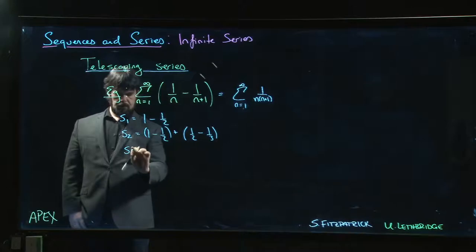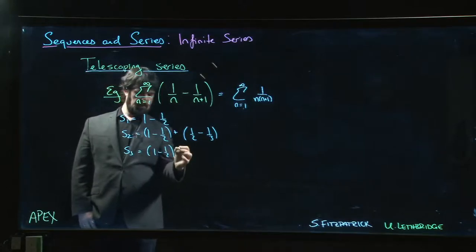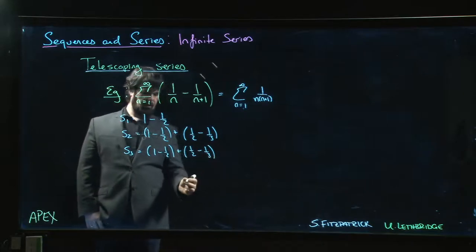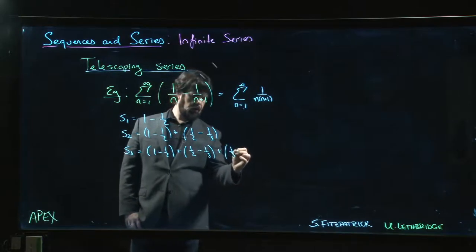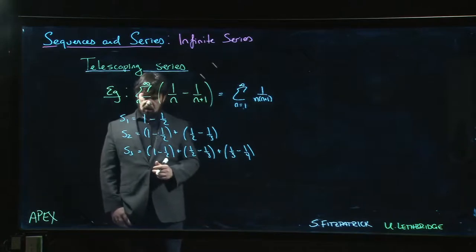S3, we have 1 minus 1 half plus 1 half minus 1 third. And now we go for the n equals 3 term, 1 third minus 1 quarter. And maybe now you can sort of see what's going on.